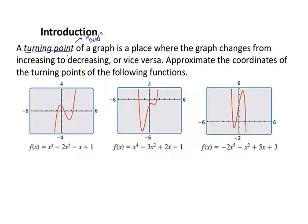A turning point is where the graph switches from increasing to decreasing. If we look at our first example, reading from left to right, we have an increasing portion, then it peaks out — that's a turning point, a maximum. Then the graph turns decreasing until it reaches a valley, or a minimum point. That's another turning point, where we switch to increasing again. Knowing those peaks and valleys really helps us analyze where the function is increasing or decreasing.